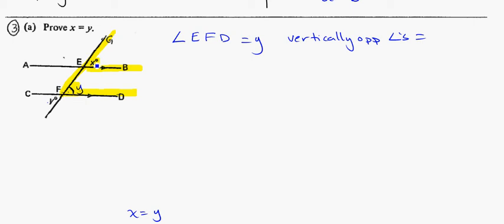But instead of just saying x is equal to y, I might go one step further. To say that, again, I know that angle E, F, D is also equal to x. And my reason for that is because of corresponding angles on parallel lines equal.